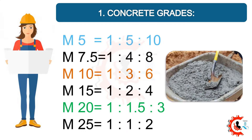Concrete grades and their mix ratios: M5 = 1:5:10, M7.5 = 1:4:8, M10 = 1:3:6, M15 = 1:2:4, M20 = 1:1.5:3, M25 = 1:1:2.